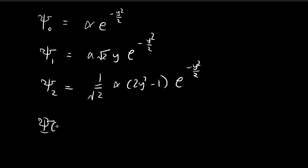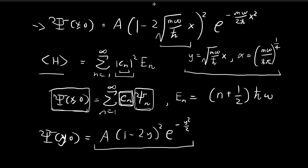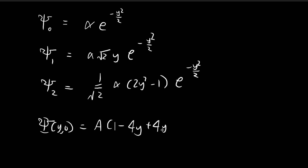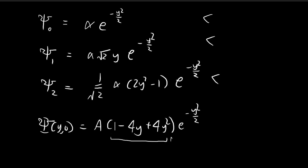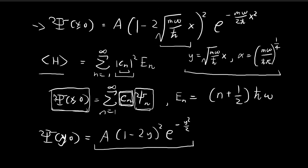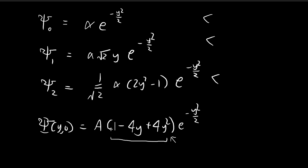Taking a closer look at the initial wave function, we can expand (1 − 2y)² to get (1 − 4y + 4y²) · e^(−y²/2). The polynomial has terms with powers zero, one, and two. Since the stationary states beyond ψ₂ would introduce higher polynomial powers, and no such terms appear here, we can deduce that the initial wave function is composed only of a linear combination of the first three stationary states.